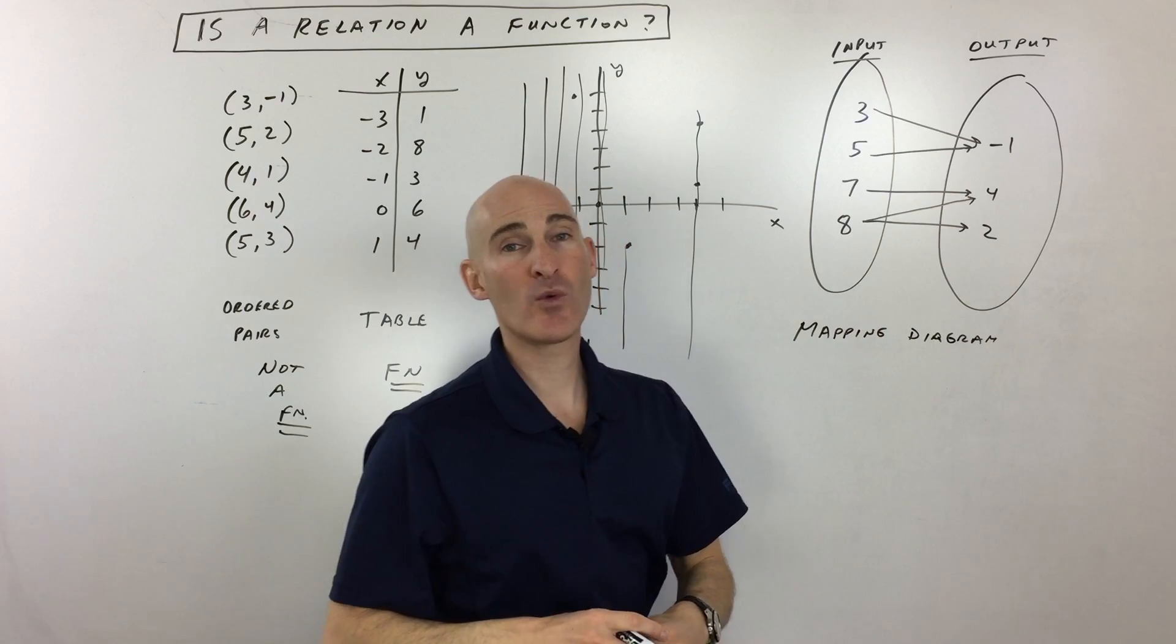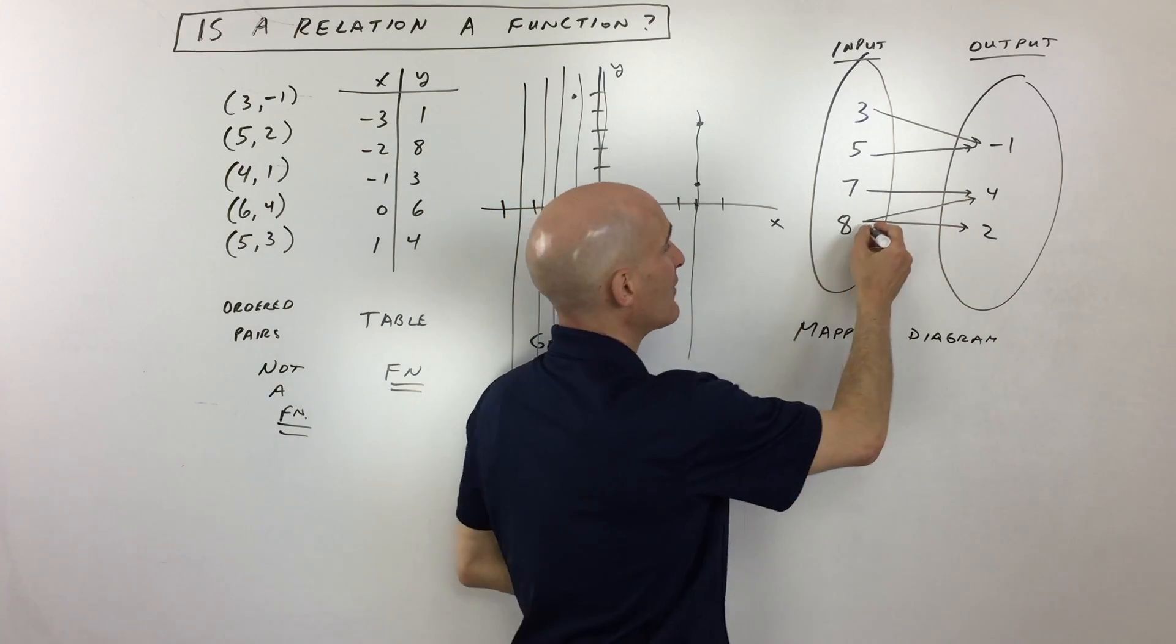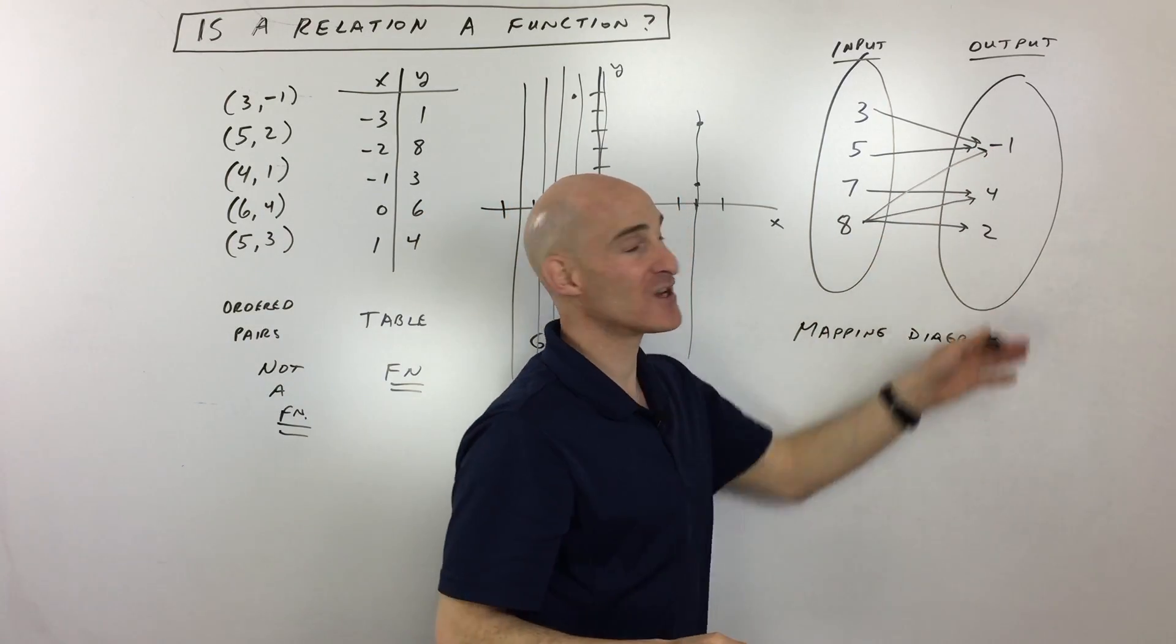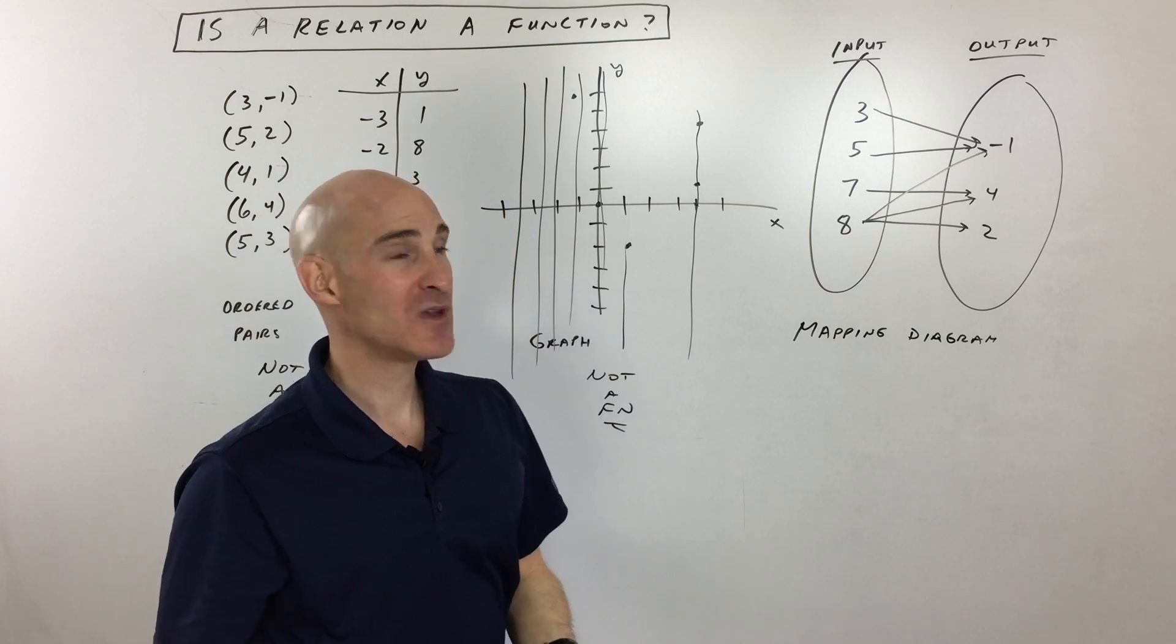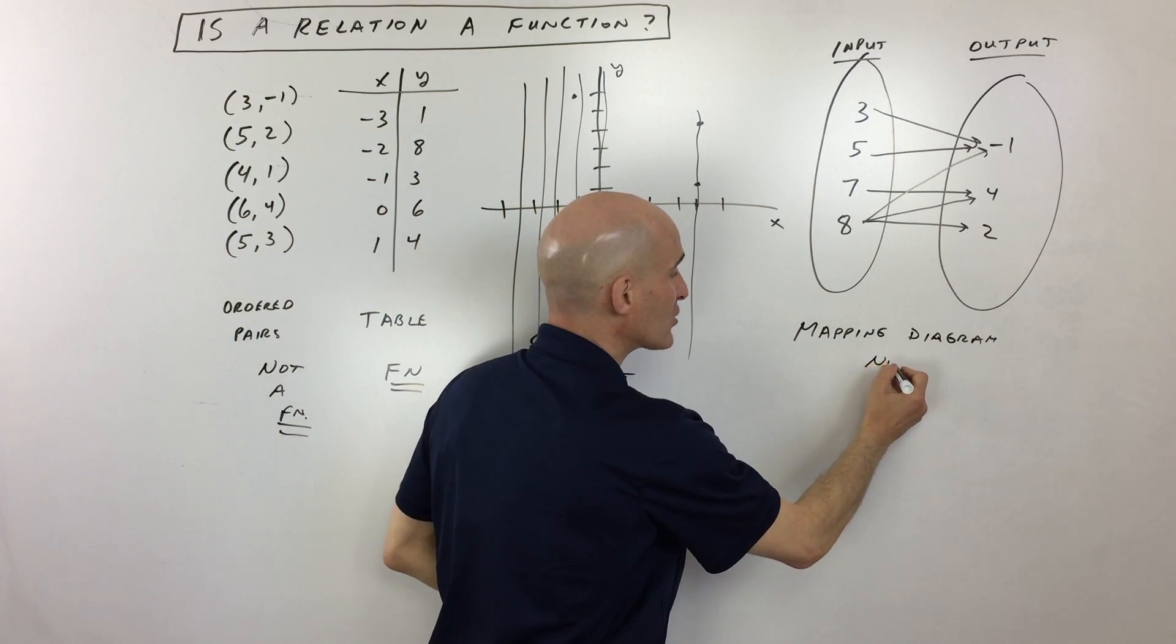Here you have one input going to more than one output. It doesn't just have to be two. You can have eight also going to negative one, four, and two. We don't know what the output is going to be. We don't know what the end result is going to be. So this one is not a function.